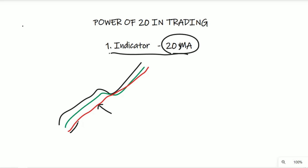This is a very small deviation. This is a small correction in the market. There are small signals that you can see. This is the Simple Moving Average. If you use the Exponential Moving Average, there are fewer false signals.